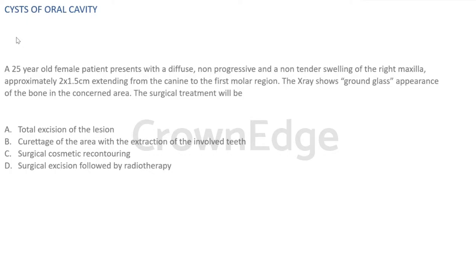When are we supposed to treat fibrous dysplasia? Cases are picked for cosmetic reasons or functional disability. In the maxilla, indications include functional deformity and encroachment of vital structures like the maxillary sinus or floor of the nose. Functional disability and cosmetic reasons are both indications for surgery. Therefore, the answer is surgical cosmetic recontouring.